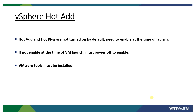We also saw that if this feature is not enabled during the time of launch, then you need to power off to enable it. Windows 10 machine was the example — VMware had not enabled this feature when creating the Windows 10 machine, so we turned off the machine, enabled the features, and thereafter we were able to perform the hot-add and hot-plug of CPU and memory. VMware Tools must be installed — that is one requirement to perform hot-add and hot-plug.